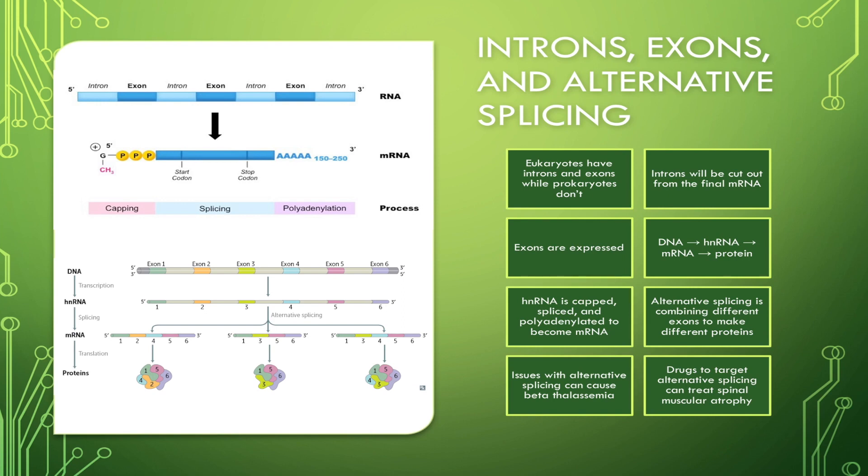So as you can see down here, these little things are introns, and up here, these little things are introns. And here, this should say hnRNA, by the way, but we'll get into that in a second. Introns do not code for protein, but are important in the regulation of gene expression.